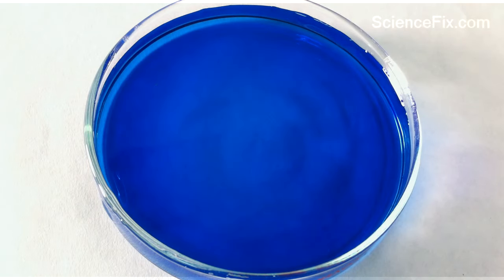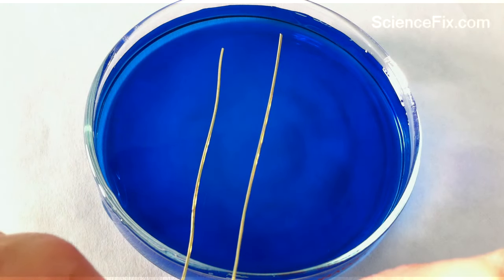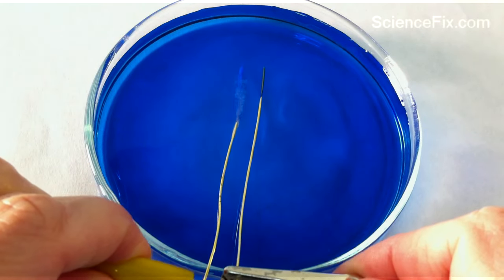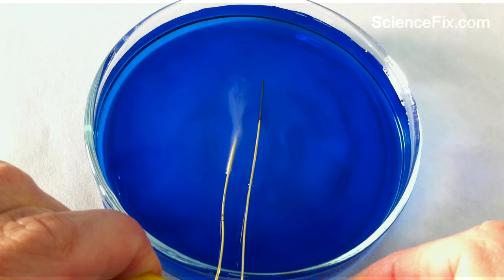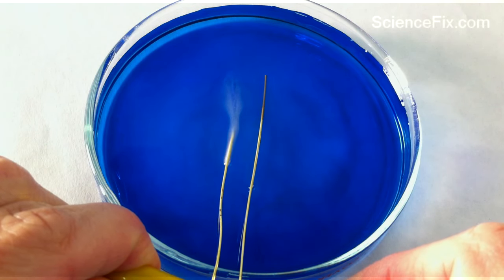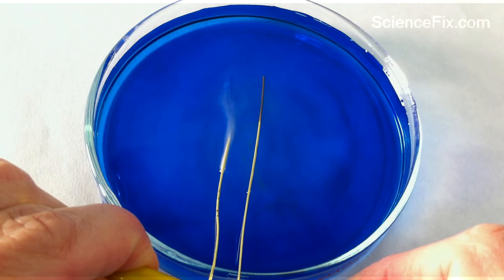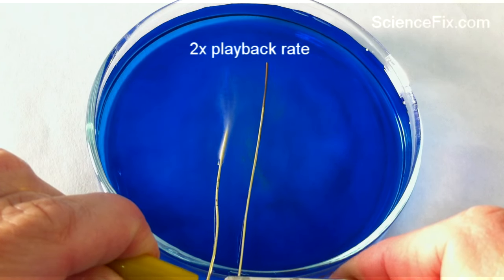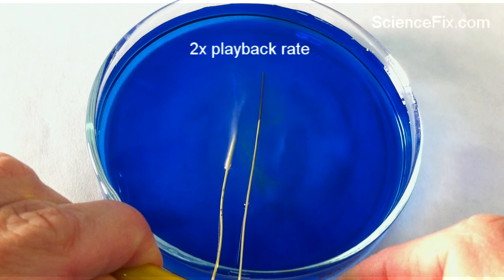Then you put the two wires into a solution of bromothymol blue. In the bromothymol blue solution is also some salt so you can get the electricity flowing through the water very much easier. You can see electricity is flowing between the two wires and you have bubbles forming, so that's the oxygen and hydrogen gas forming.